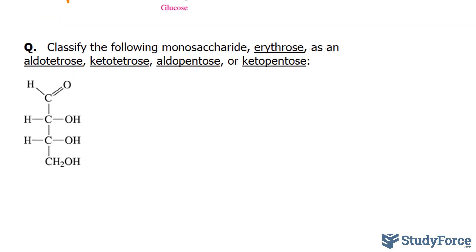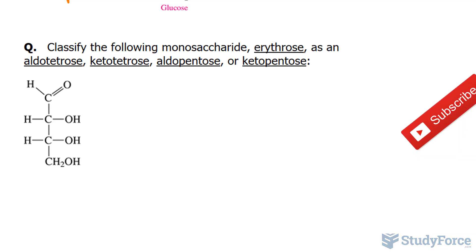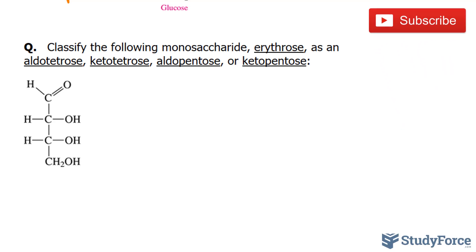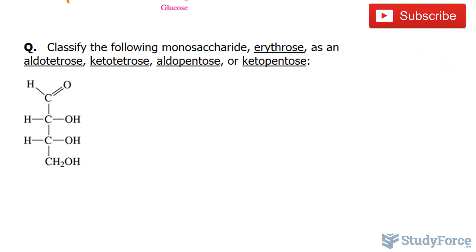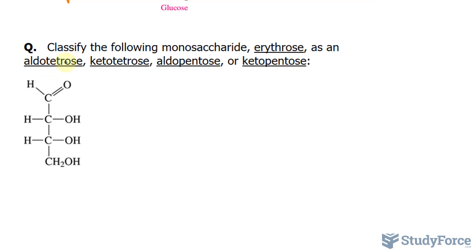Moving on to question two: classify the following monosaccharide erythrose as an aldotetrose, ketotetrose, aldopentose, or ketopentose. Let's take a look at these words. We have TET, which is four — like tetro. And we also have pent.